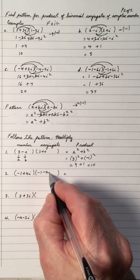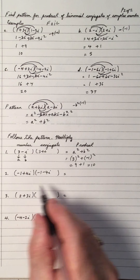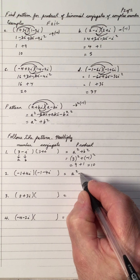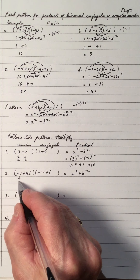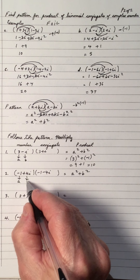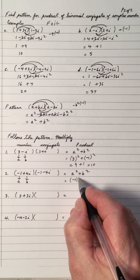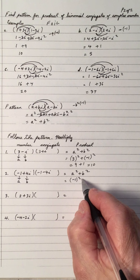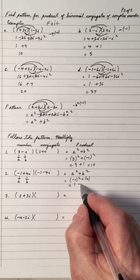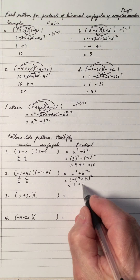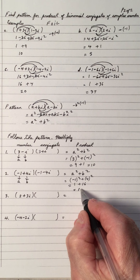If you want to multiply using the conjugate by FOIL, you can do that too. But the quick pattern is a squared plus b squared. For the next problem, a is negative 1 and b is 4, so negative 1 squared is 1 and 4 squared is 16, which gives 17.